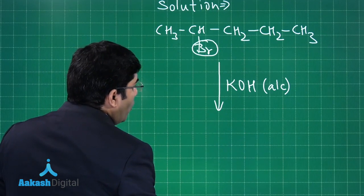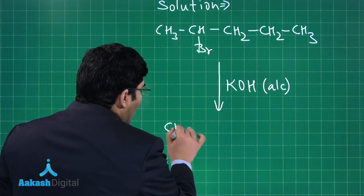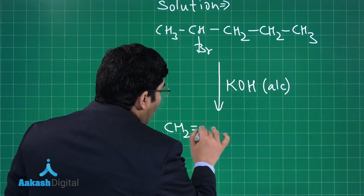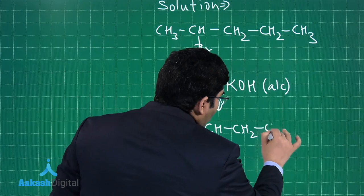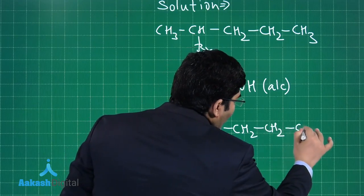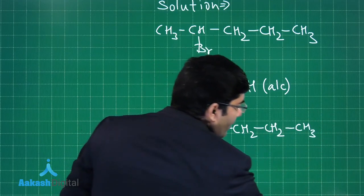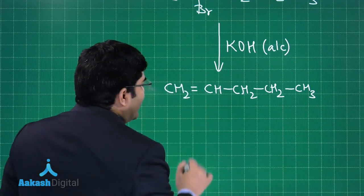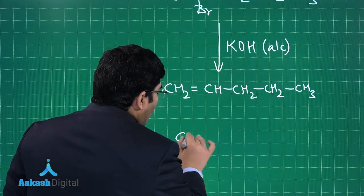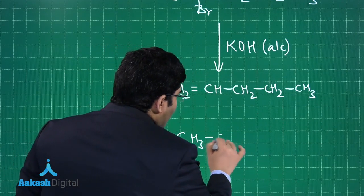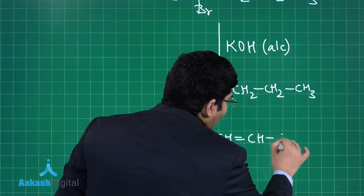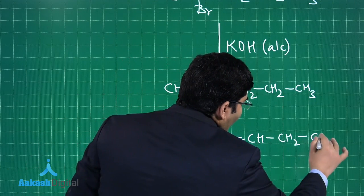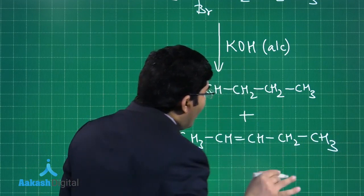First product is CH2=CH-CH2-CH2-CH3, and second one is CH3-CH=CH-CH2-CH3. Now both are alkenes and we have to find out which alkene is more stable.